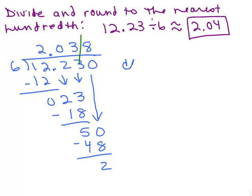And let's just do a little check. What is 6 times 2.04? I think that's 12.24. You could do that without a calculator. And again, it's close. So it seems like a reasonable answer, 12.24 is close to 12.23.